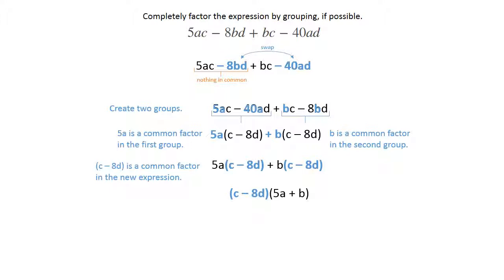Write down what you have left, which is 5A plus B, and that is the final answer, C minus 8D and 5A plus B, and that concludes our factoring by grouping.